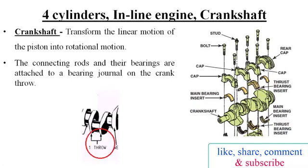The function of crankshaft is to transfer the linear motion of piston into rotational motion. The energy from expanding gases during burning of fuel in the combustion chamber is delivered to the crankshaft through the piston, piston pin, and connecting rod or con rod. The connecting rod and the bearings are attached to a bearing journal on the crank throw.